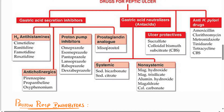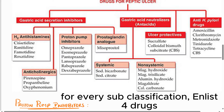Prostaglandin analog is misoprostol, which inhibits gastric acid secretion. Next, gastric acid neutralizers are nothing but antacids, which neutralize acid. There are two sub-types: systemic — sodium bicarbonate, sodium citrate; and non-systemic — magnesium hydroxide, magnesium trisilicate, aluminium hydroxide, magaldrate, calcium carbonate.